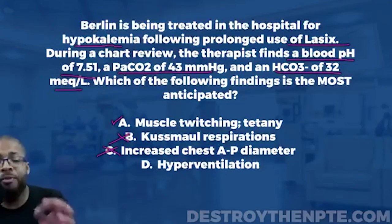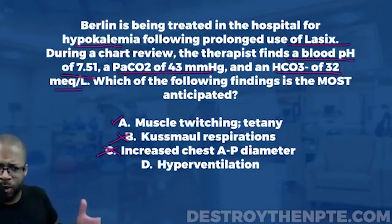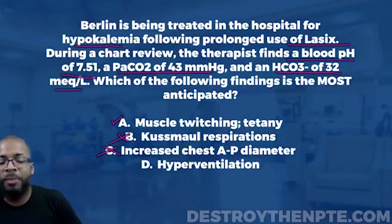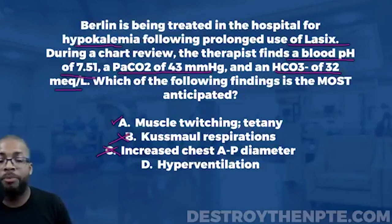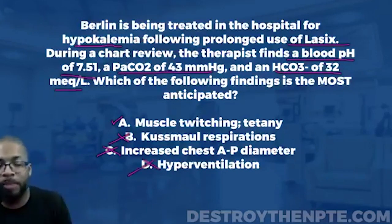Answer D: hyperventilation. This is very similar to answer B — Kussmaul respirations are a form of hyperventilation. Just as with B, we would not expect hyperventilation because it would push the patient even further into alkalosis. Also, hyperventilation would be expected more with a respiratory issue, not a metabolic one. D is also eliminated.